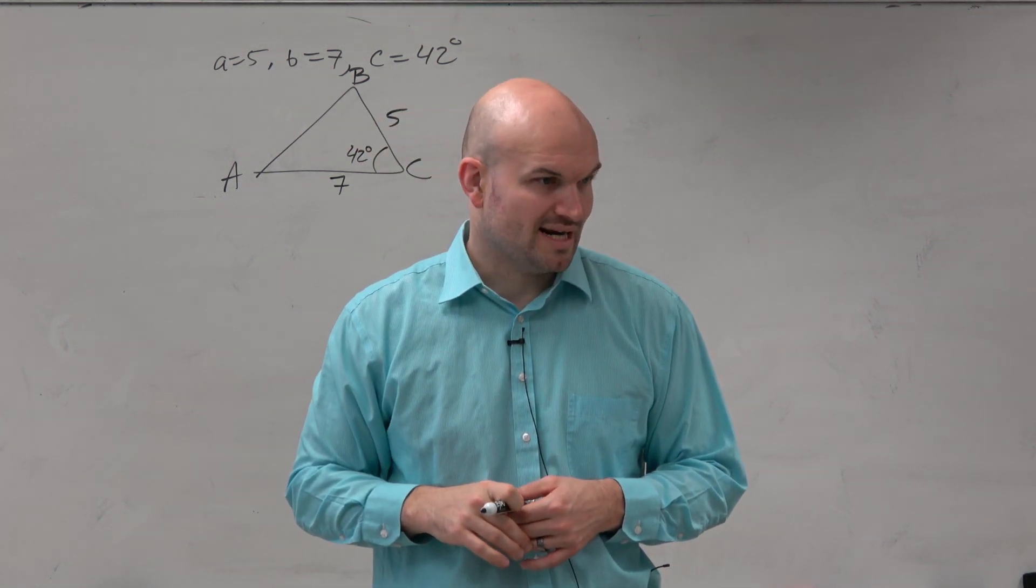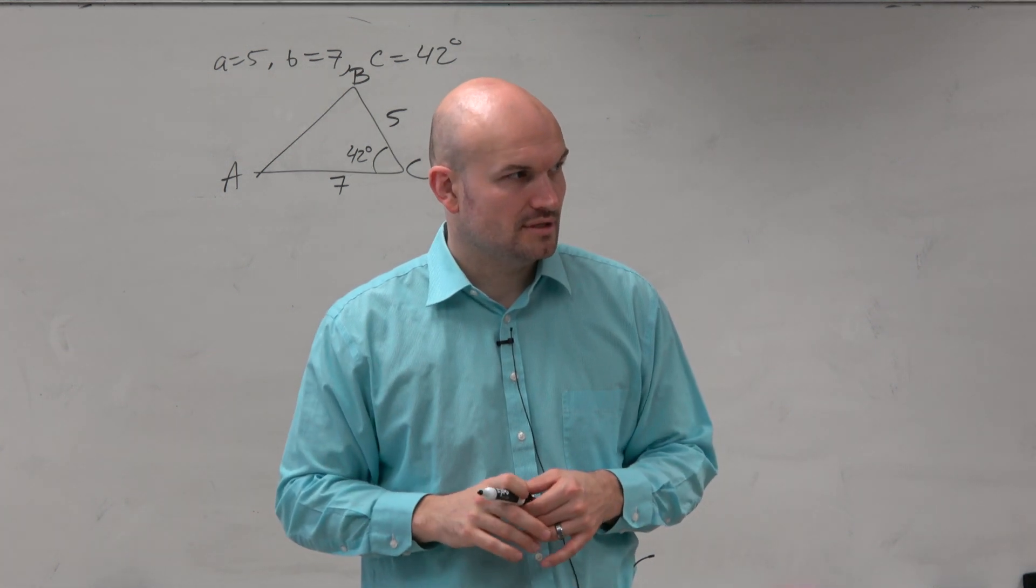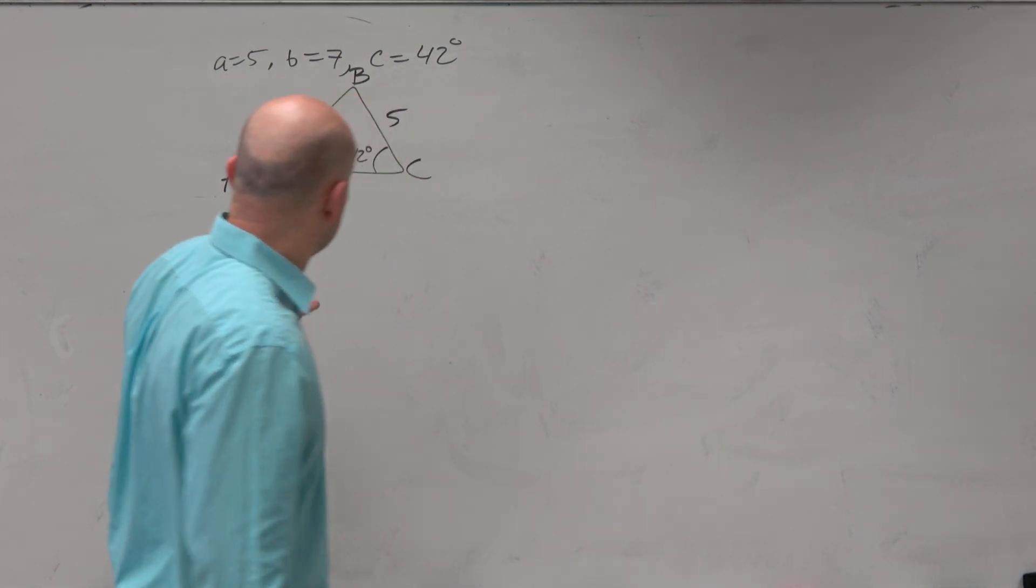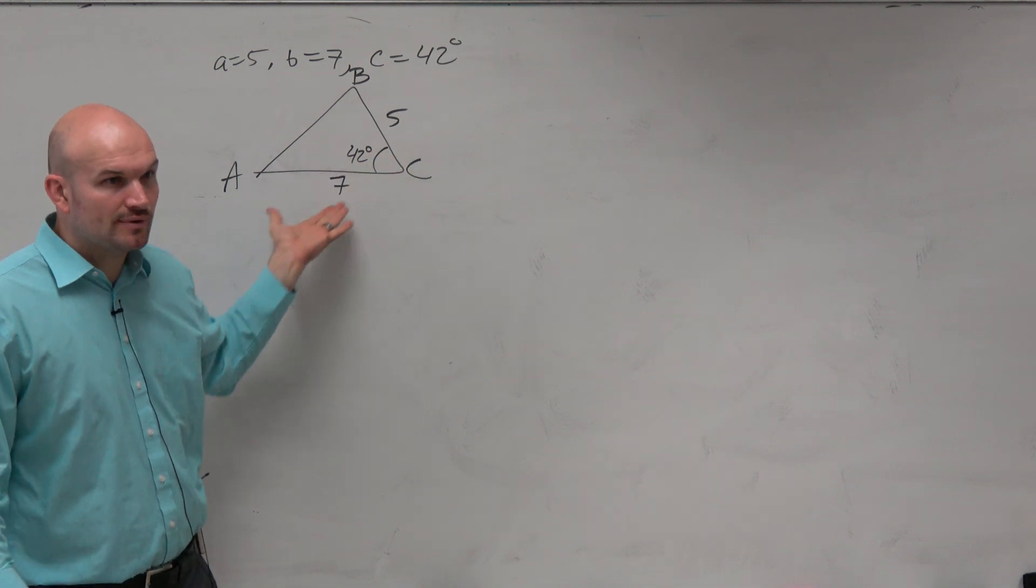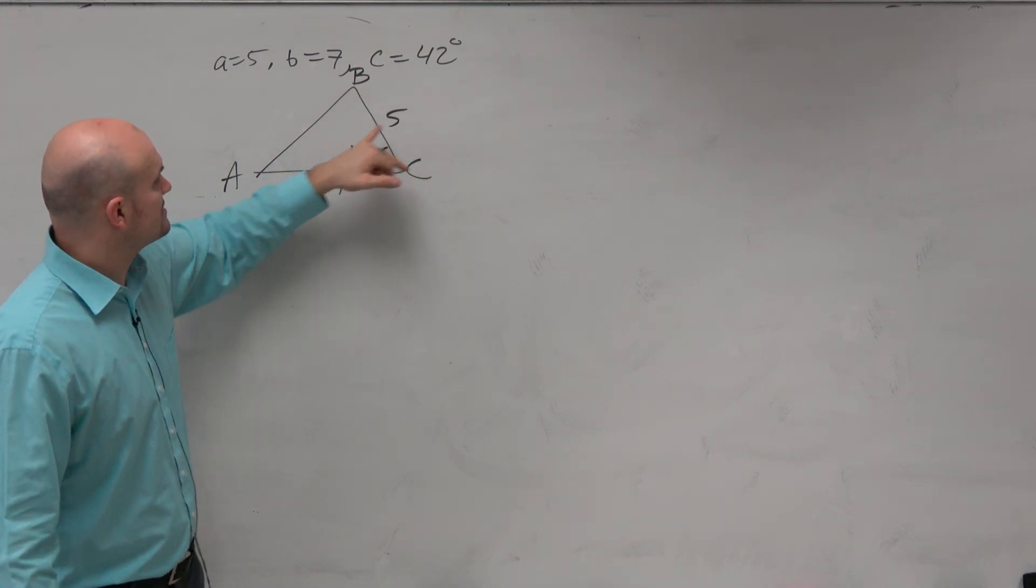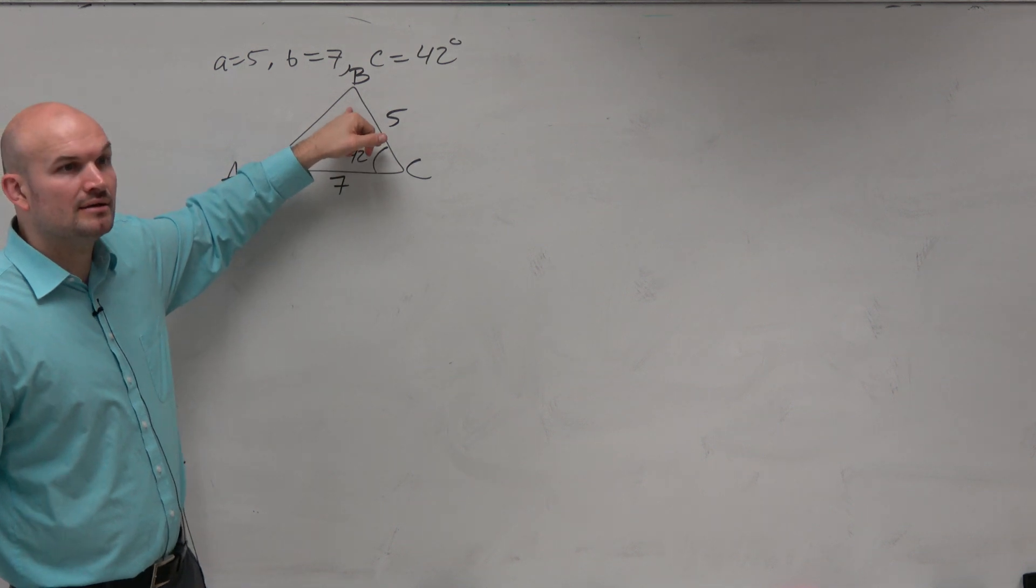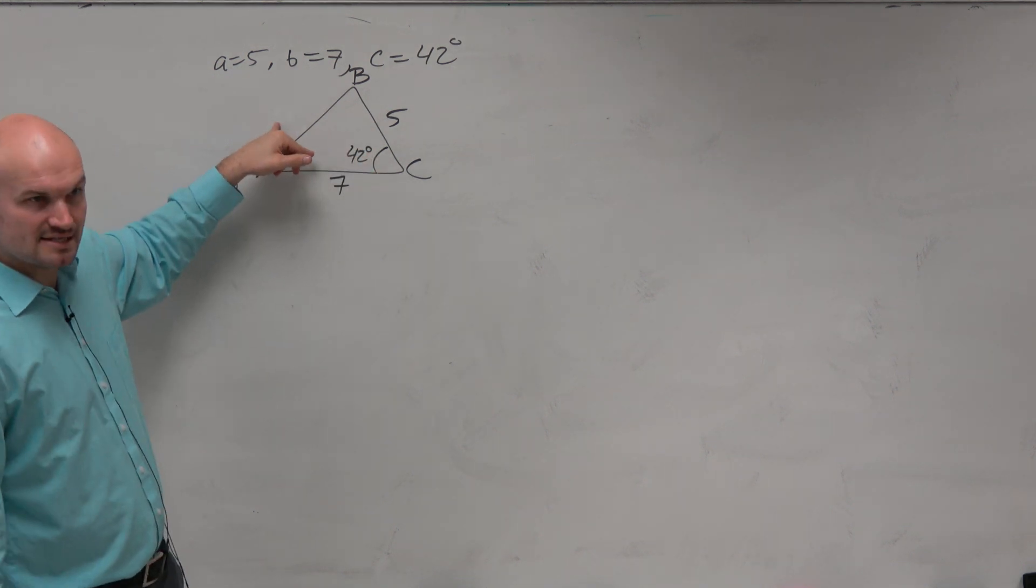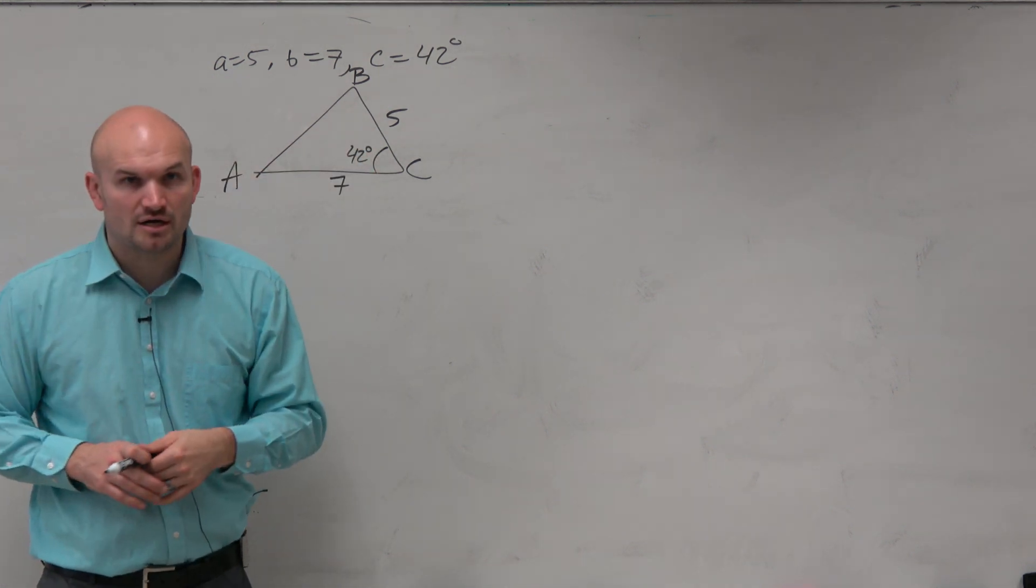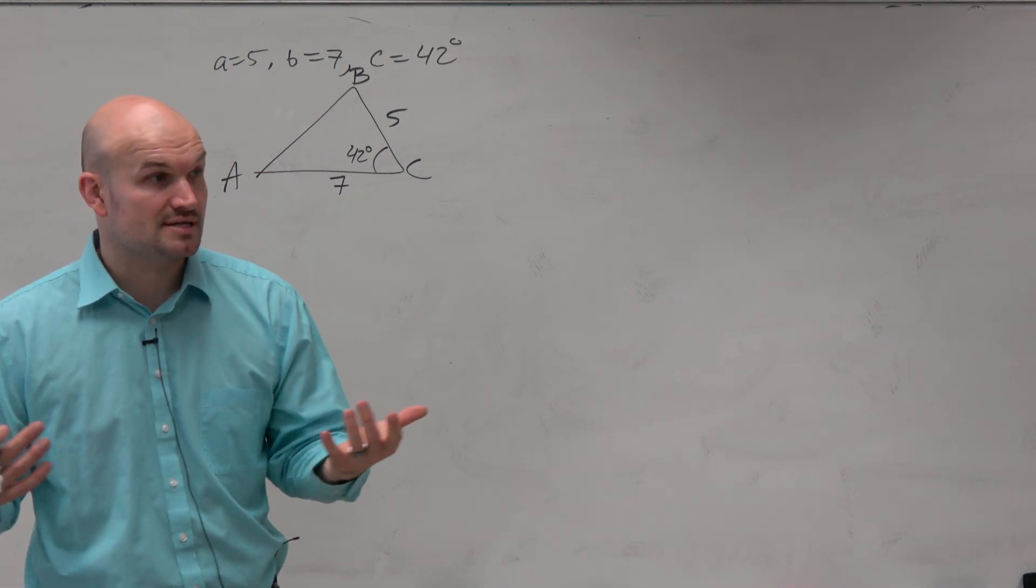So therefore, I recognize I have to use the law of cosines. There's no relationship, right? There's no ratio here. Right? I have side-length A, but I don't have angle A. I have side-length B, but I don't have angle B. I have angle C, but I don't have side-length C. Right? So there's no ratio I can create for the law of sines. So I have to use law of cosines.